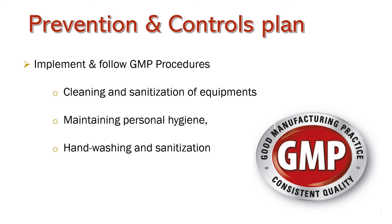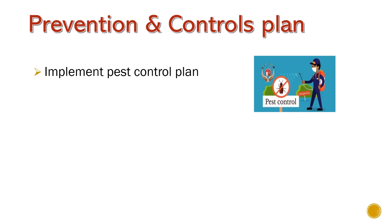Implement and follow GMP procedures. Good Manufacturing Practices are the basic operational and environmental conditions required to produce safe foods. They ensure that ingredients, products, and packaging materials are handled safely and that food products are processed in a suitable environment. GMP addresses hazards associated with persons and environments during food production, and provides a foundation for food safety systems. Implement a pest control plan — even if cleaning and sanitization activities are done properly, pests like ants, cockroaches, flies, or mosquitoes crawling in food processing areas can still contaminate food materials.